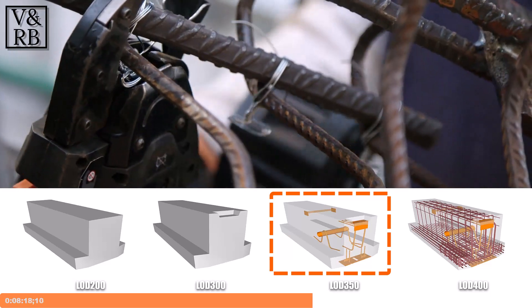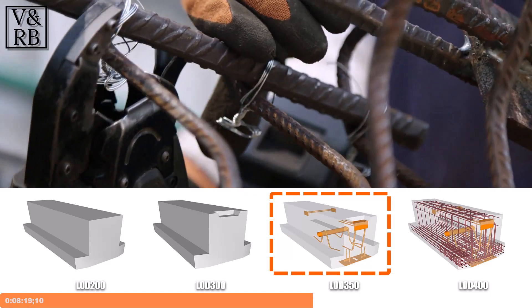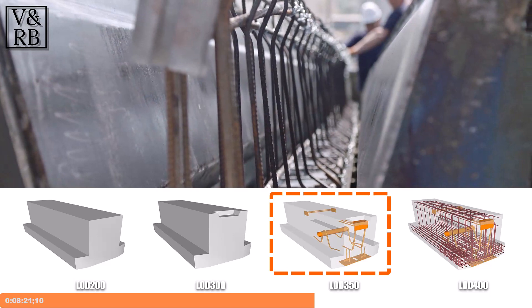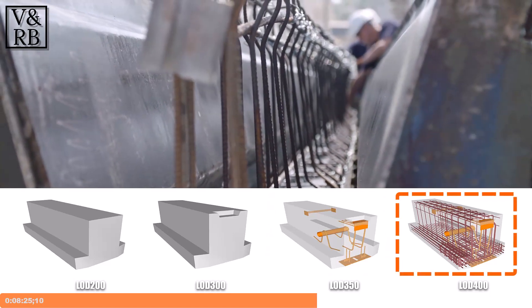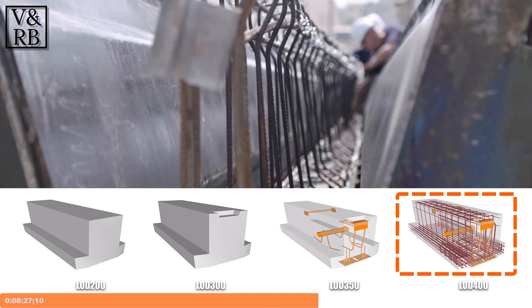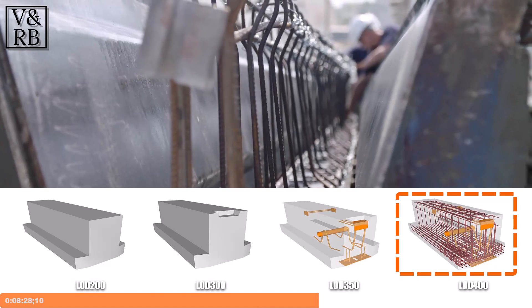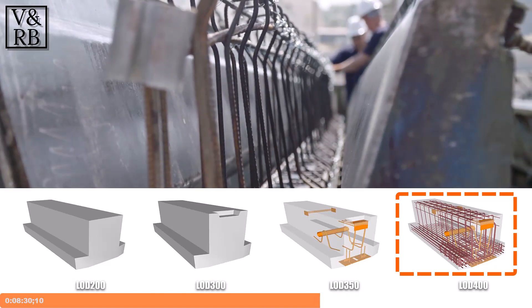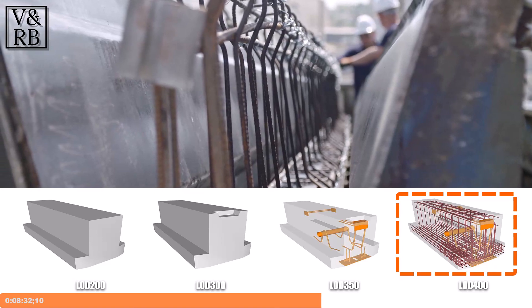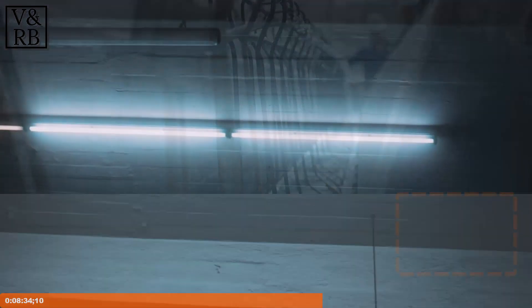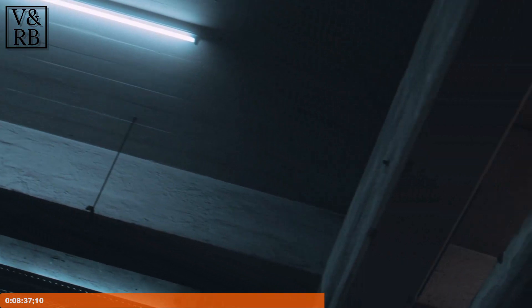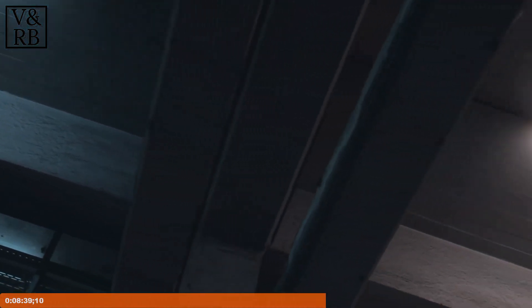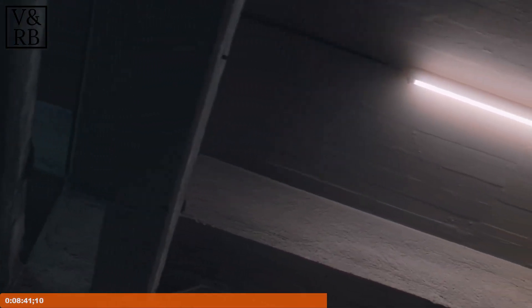Critical structural zones, such as areas that cannot be penetrated, cut, or damaged, are also modeled. LOD 400 represents fabrication level information and includes all reinforcement, including post-tensioned elements detailed and modeled with cambers. LOD 500 represents the as-built state of the project, and allows for a digital twin deliverable for management during facility operations.